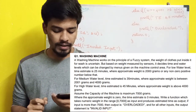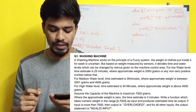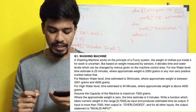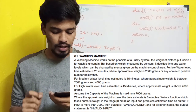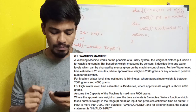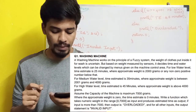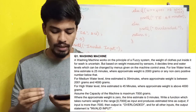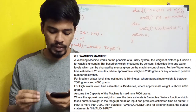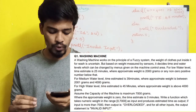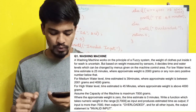For low water level, the time estimate is 25 minutes where the approximate weight is 2000 grams or any non-zero positive number below that. For medium water level, the time estimated is 35 minutes where the approximate weight is between 2001 grams and 4000 grams. For high water level, the estimated time is 45 minutes where approximate weight is above 4000 grams. Assume the capacity of the machine is maximum 7000 grams.